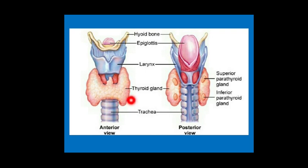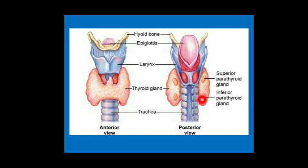In the anterior view, you can see the thyroid gland encircling the trachea with the thyroid cartilage above it and the cricoid cartilage below. In the posterior view, you can see the 4 glands on the back of the thyroid gland. With the esophagus and pharynx removed, you can directly see the trachea with the epiglottis, thyroid cartilage, and cricoid cartilage.